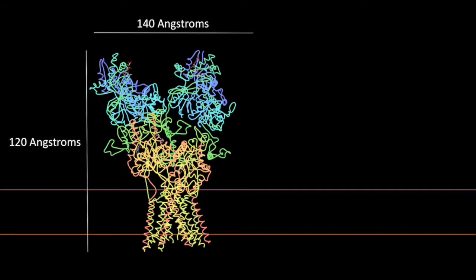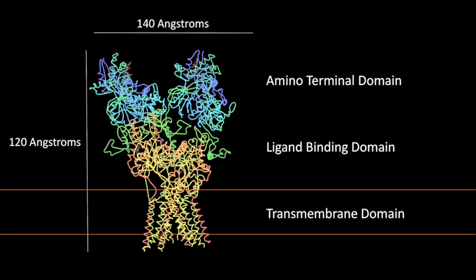This is a visual representation of how AMPA receptors look like according to the protein data bank. This ionotropic receptor is 140 angstroms wide and 120 angstroms in length. We can break down the structure in three subunits: the aminoterminal domain, ligand binding domain, and transmembrane domain.